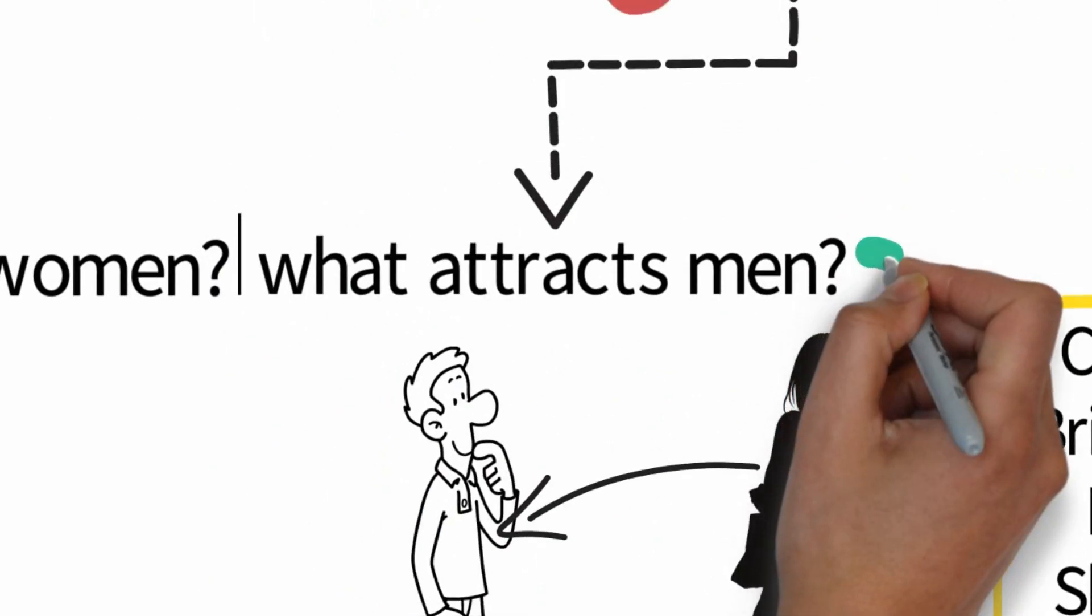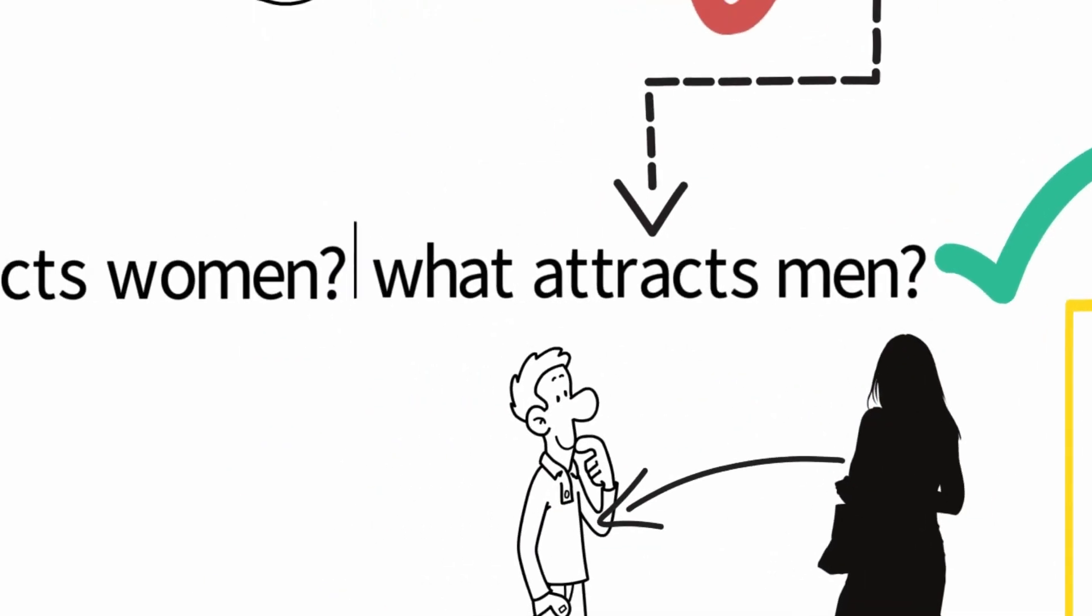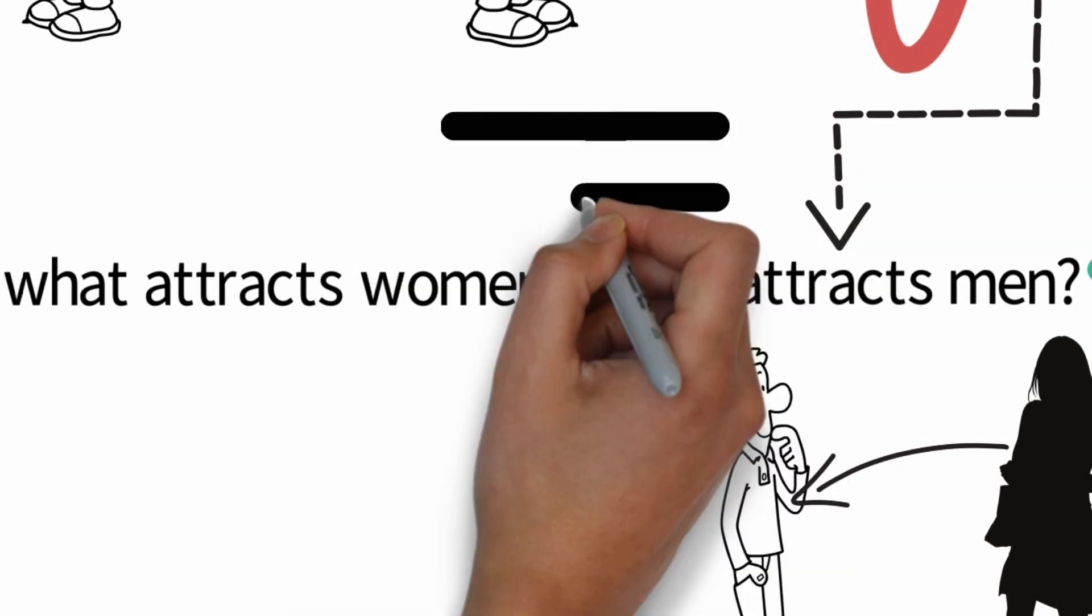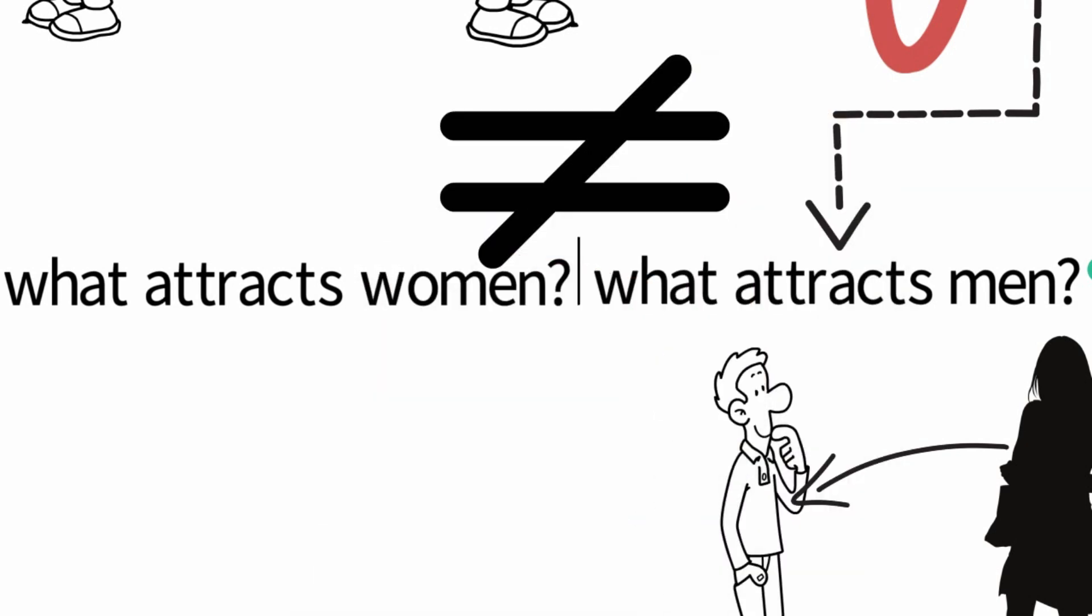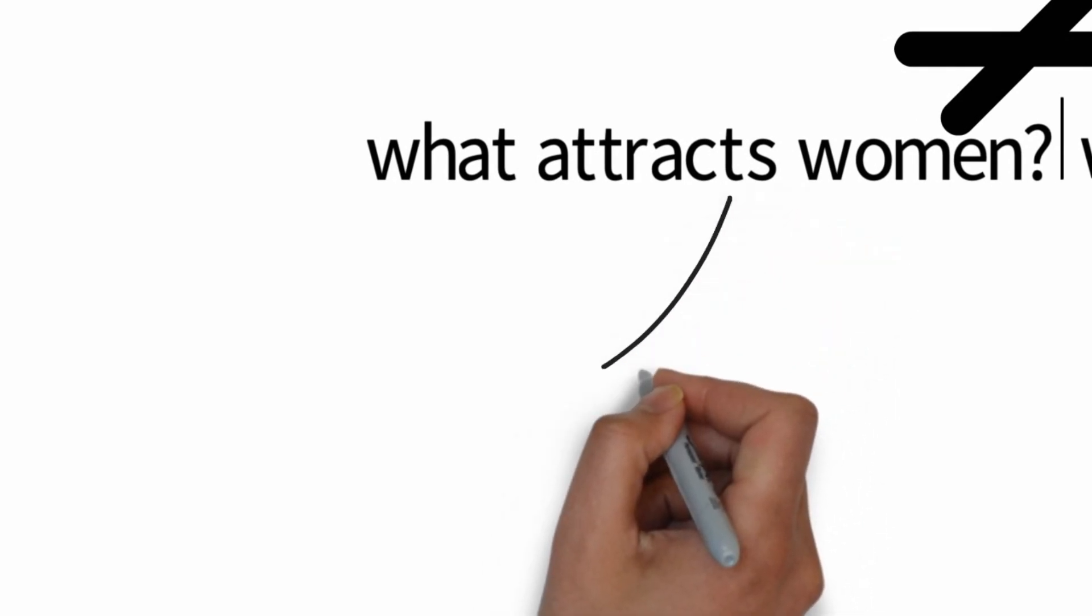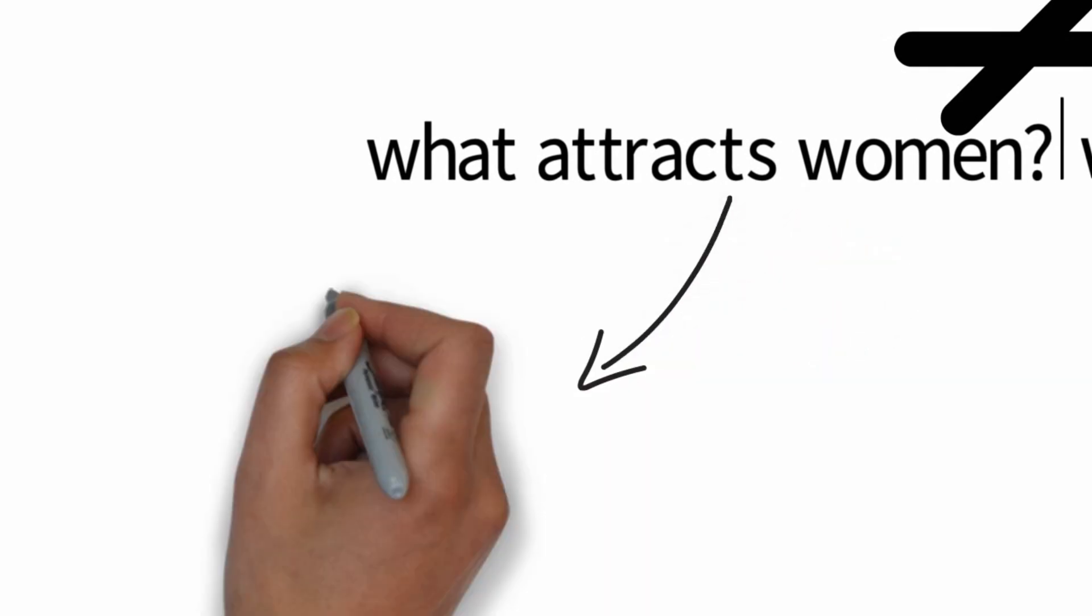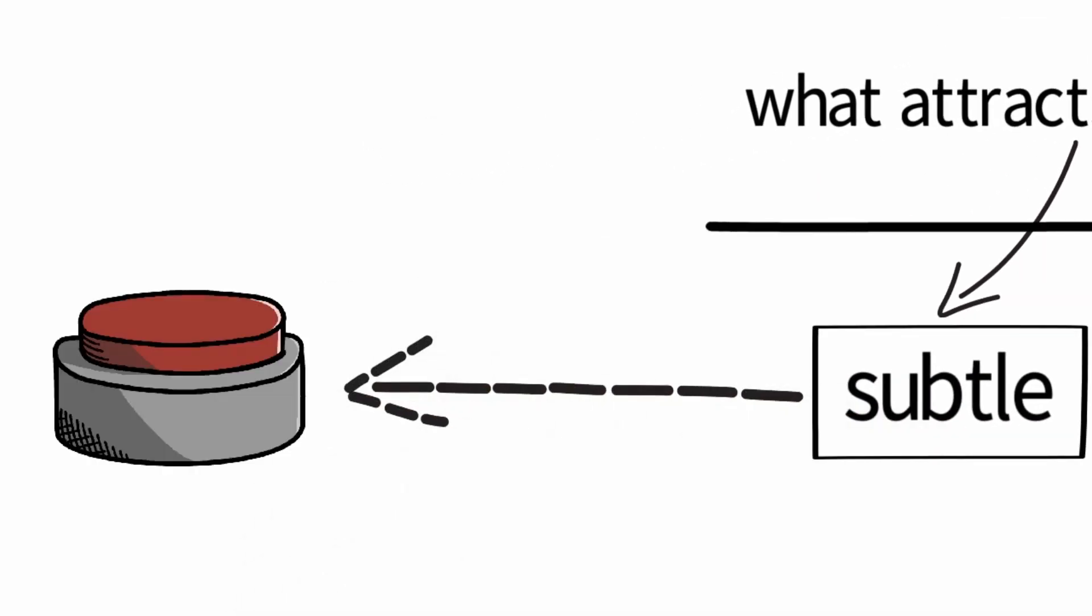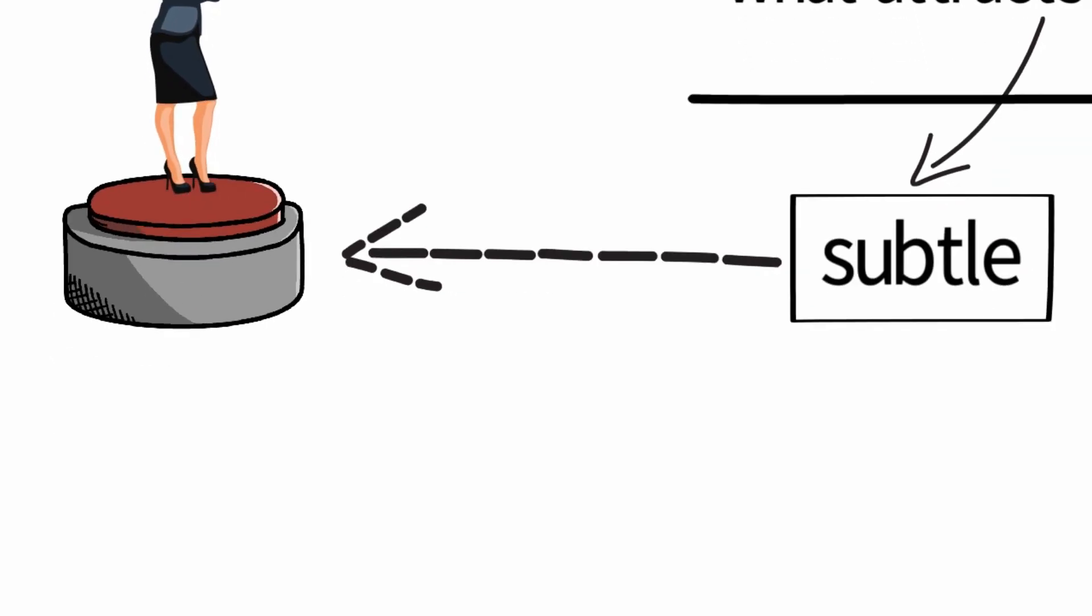Now that we've defined what attracts men, let's compare it to what attracts women. And I'm telling you, it's an entirely different story. What attracts females is hidden beneath the surface. It's so subtle, but once you uncover this, you can easily push the right buttons and make any woman attracted to you.